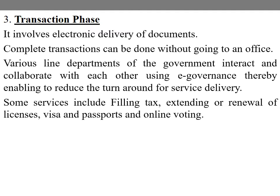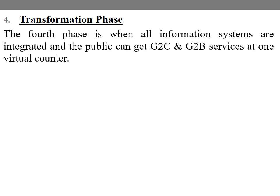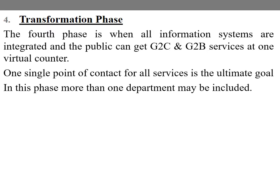Phase three, the transaction phase, is made more complex because of security and personalization issues. The fourth and final phase is the transformation phase. This is when all information systems are integrated and the public can get G2C and G2B services at one virtual counter. A single point of contact for all services is the ultimate goal.